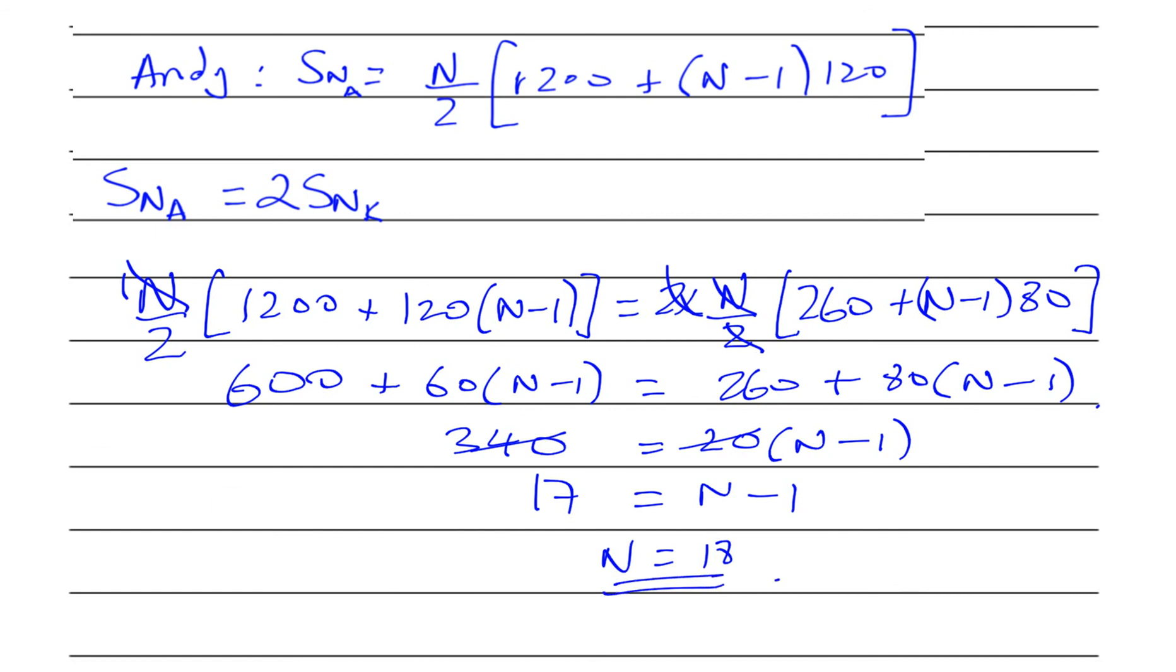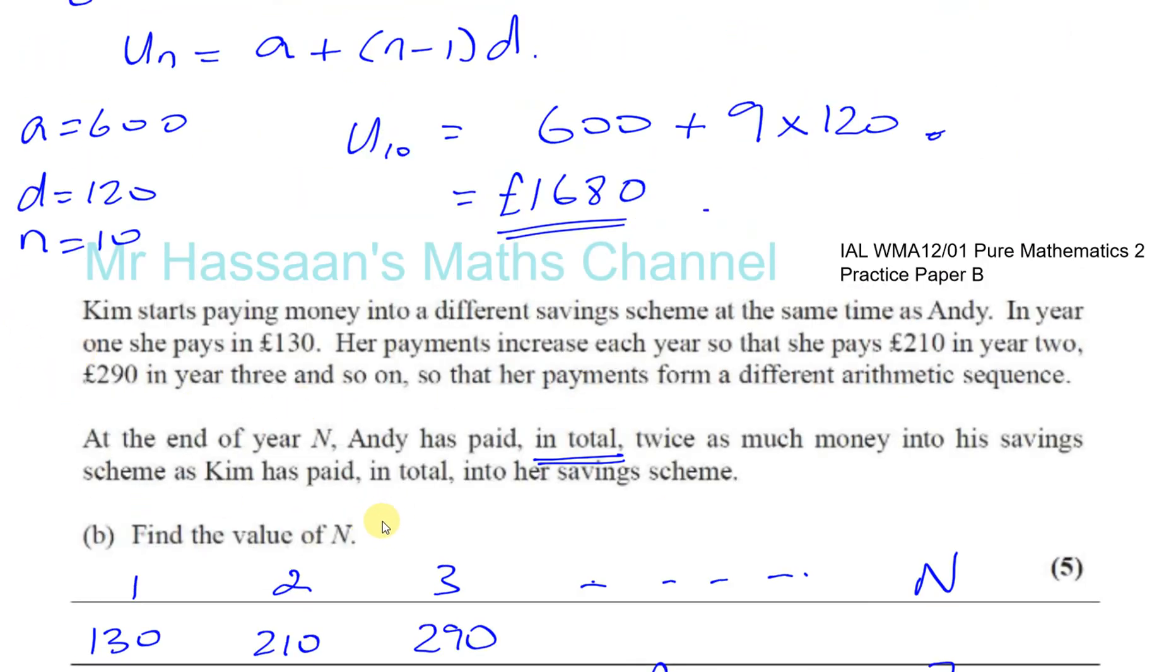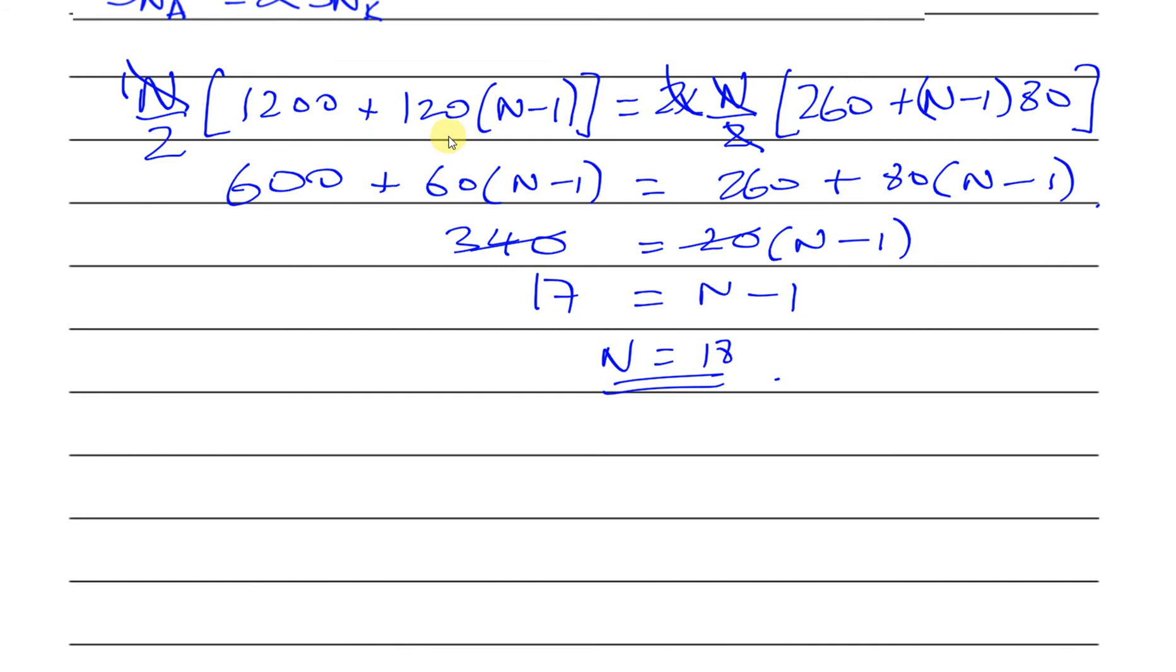The question asks to find the value of N, so N = 18. We could have solved this by expanding all the brackets, collecting like terms, but this is a nice quick way of doing it: 600 - 260 = 340, and 80(N-1) - 60(N-1) = 20(N-1), then divide both sides by 20 to get N-1 = 17, so N = 18.